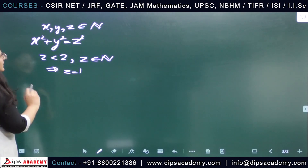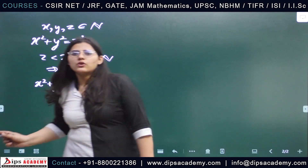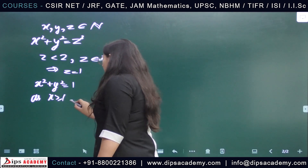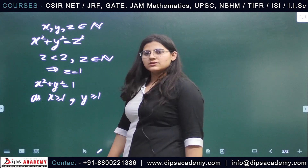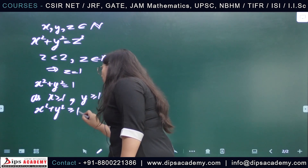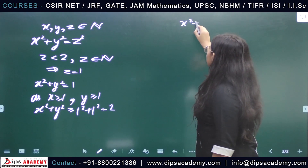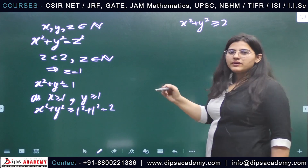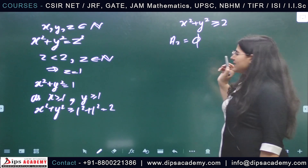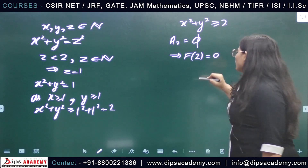We need to find x and y in N such that x² + y² = 1. Since x is a natural number, x ≥ 1, and y ≥ 1, we get x² + y² ≥ 1² + 1² = 2. So x² + y² ≥ 2, but we need it to equal 1, which is never possible. Therefore A_2 is also the empty set, and f(2) = 0.